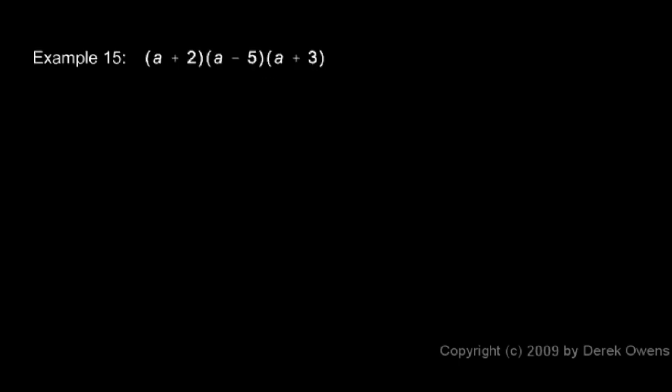And example 15 is a little bit harder. We have three things multiplied together. The way to do this is to multiply two of them together and get something that's equivalent to that, and then that will be multiplied by the a plus 3. So we'll start by doing the a plus 2 times the a minus 5, and then we'll tack on the a plus 3 on the end.